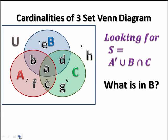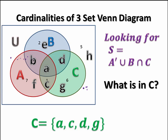Now what's in B? The second set that we need to use. B is the blue set. It includes a, b, d, and e. We also need to use C. What's in set C? C is the green set. C includes the regions a, c, d, and g.